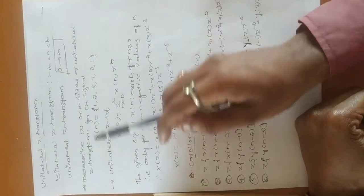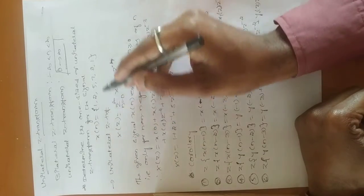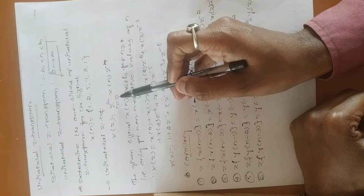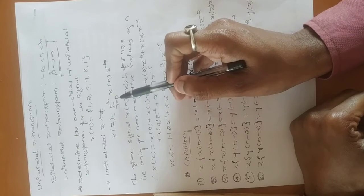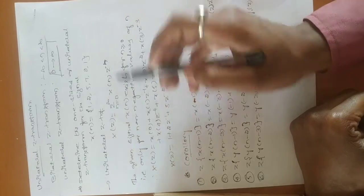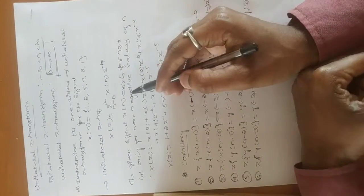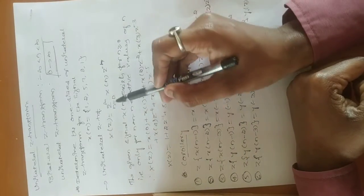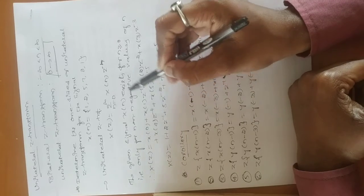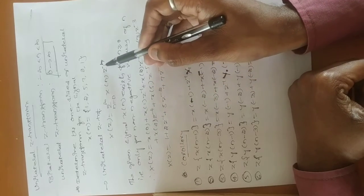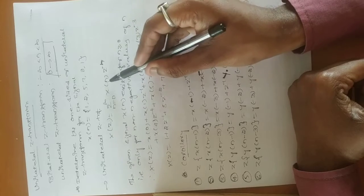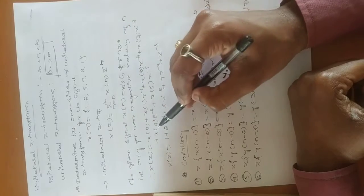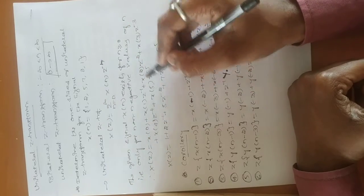Here is the given question: determine the one-sided or unilateral Z-transform of the signal with samples {1, 2, 5, 7, 0, 1}. Using X(z) = Σ from 0 to ∞ of x(n)·z⁻ⁿ, you substitute: x(0)·z⁰ + x(1)·z⁻¹ + x(2)·z⁻² + x(3)·z⁻³ + x(4)·z⁻⁴ + x(5)·z⁻⁵.